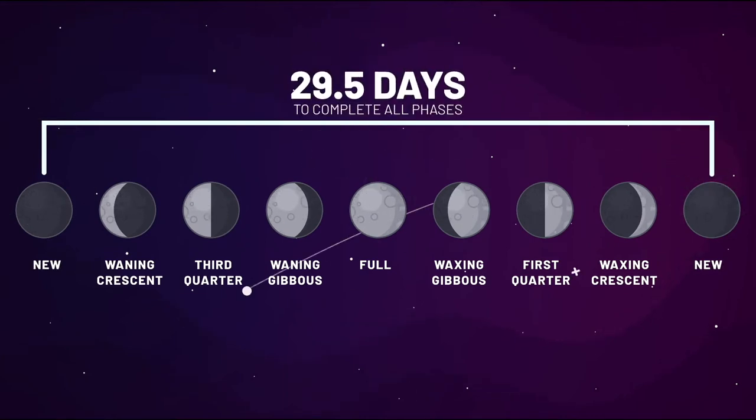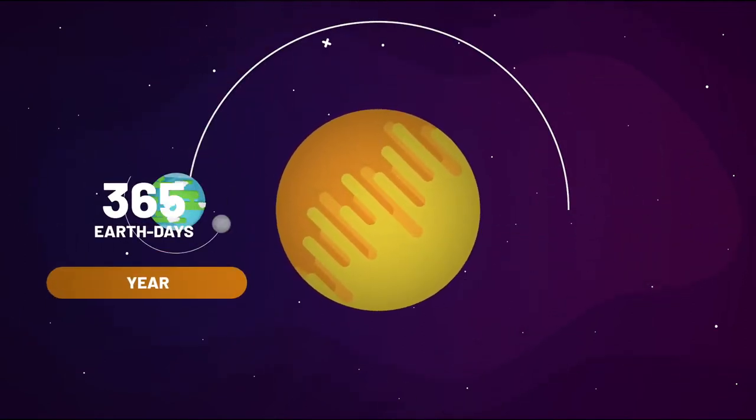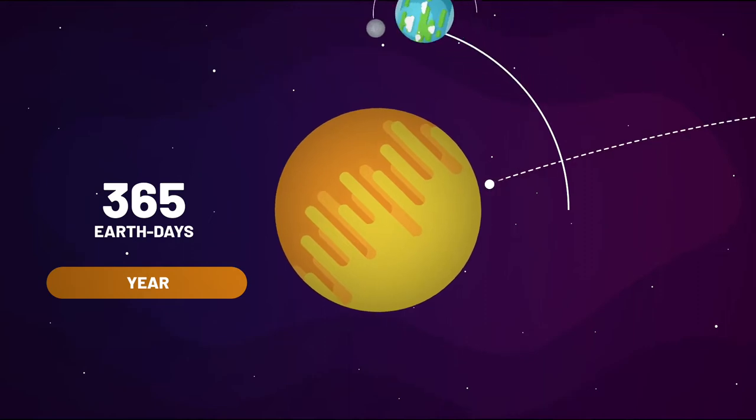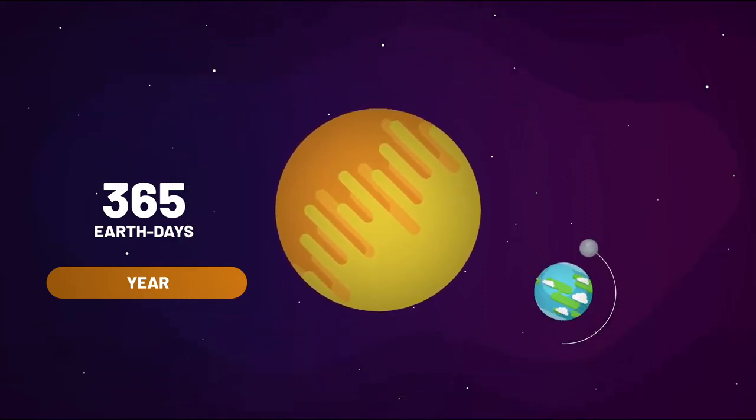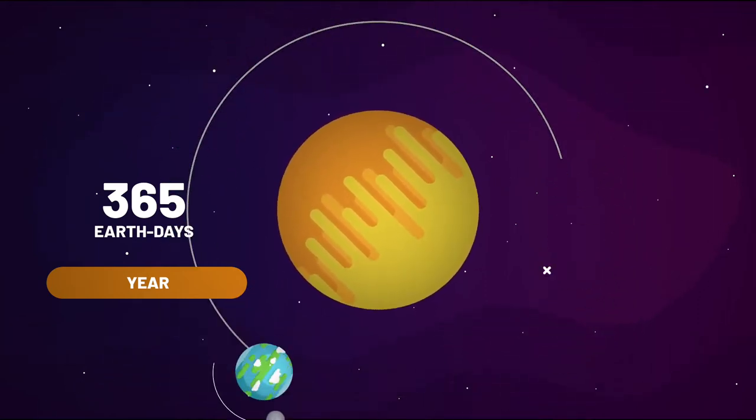But working its way through all of the phases, from New Moon to New Moon, takes about 29 and a half days. And we call this a synodic month. A year, or one complete orbit around the Sun, is about 365 days on the Moon, because it's attached to the Earth on its journey around the Sun.